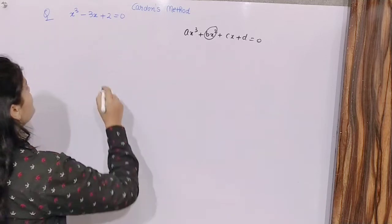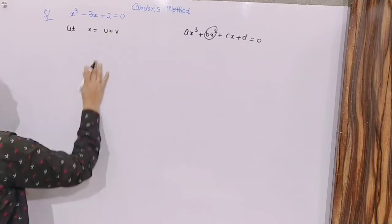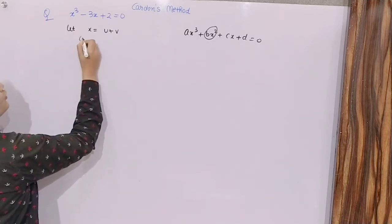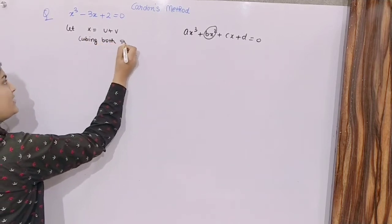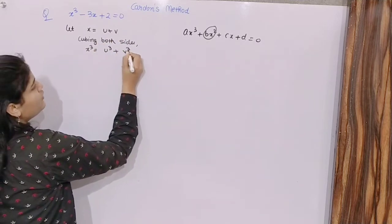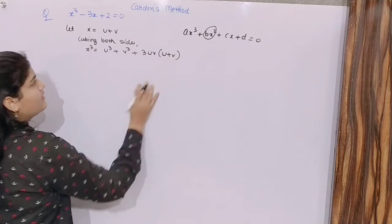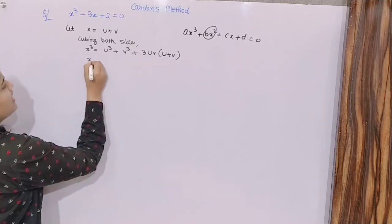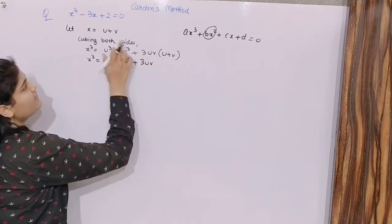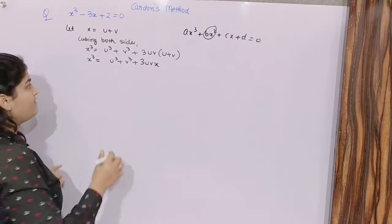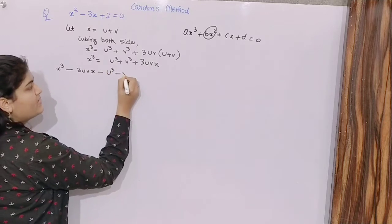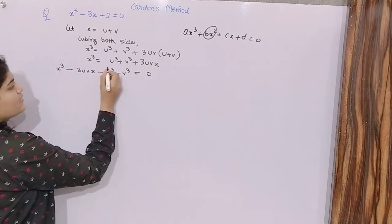If you have a cubic equation, let x equal u plus v. Since we have a cubic term, cubing both sides gives x cubed equals (u+v)³, which expands to u³ plus v³ plus 3uv(u+v). Since u+v equals x, we get x³ equals u³ plus v³ plus 3uv·x. Taking all terms to the left-hand side: x³ minus 3uv·x minus u³ minus v³ equals 0.